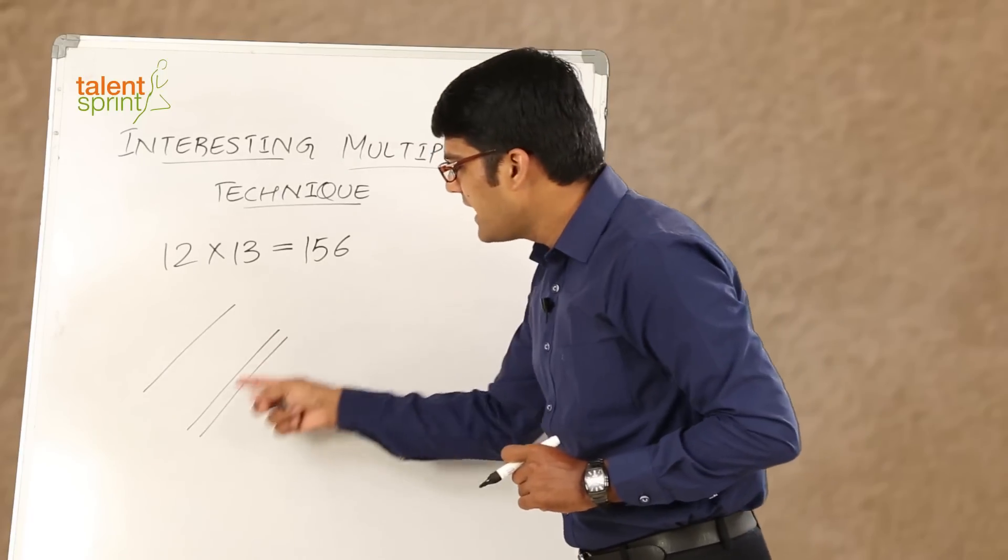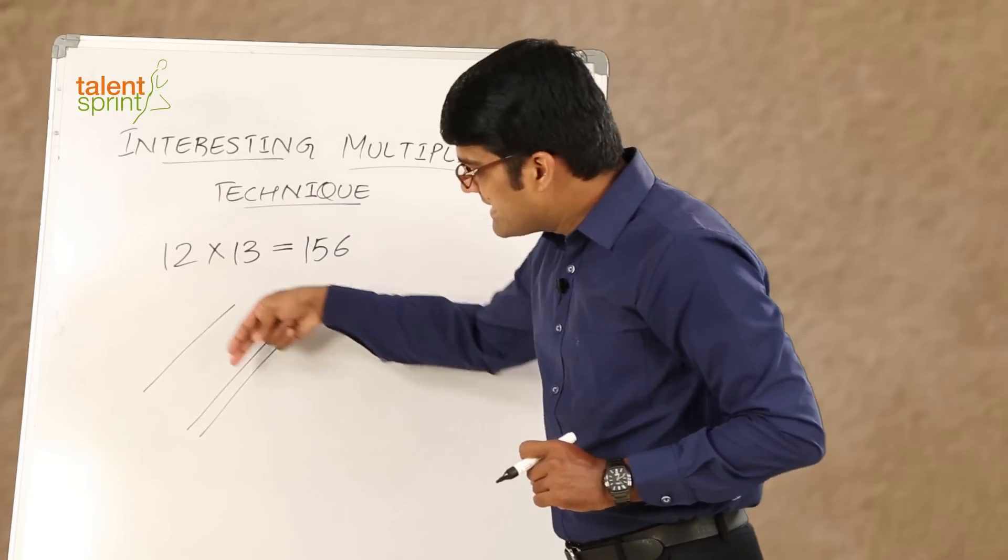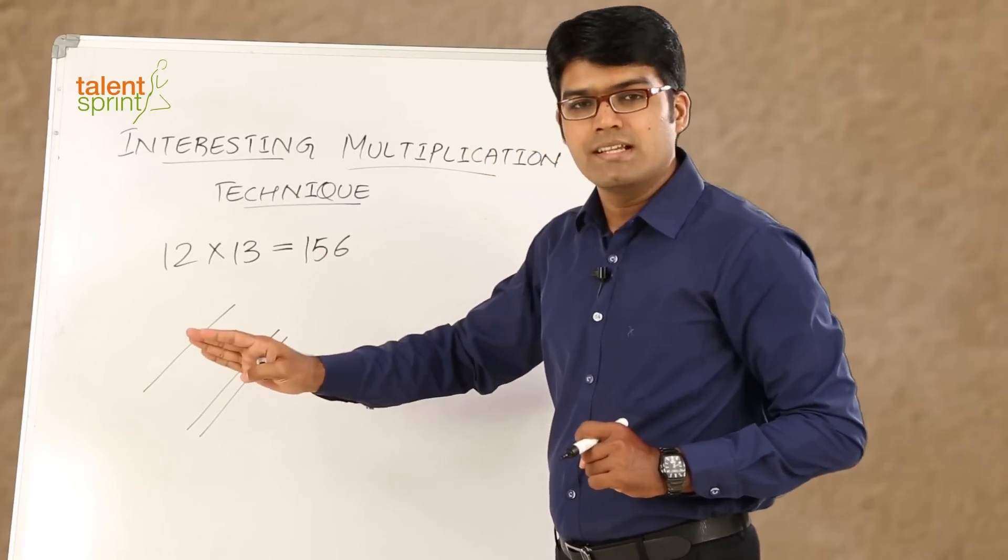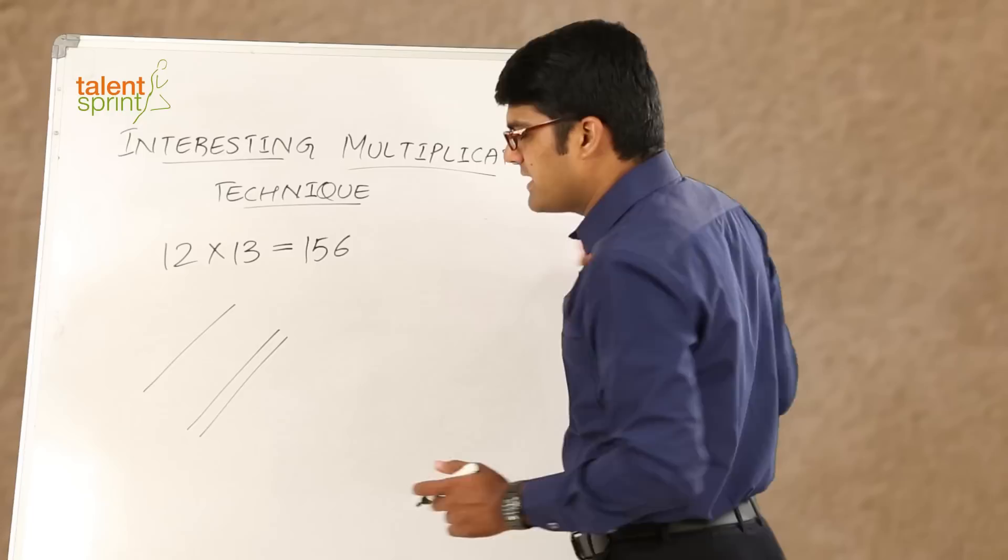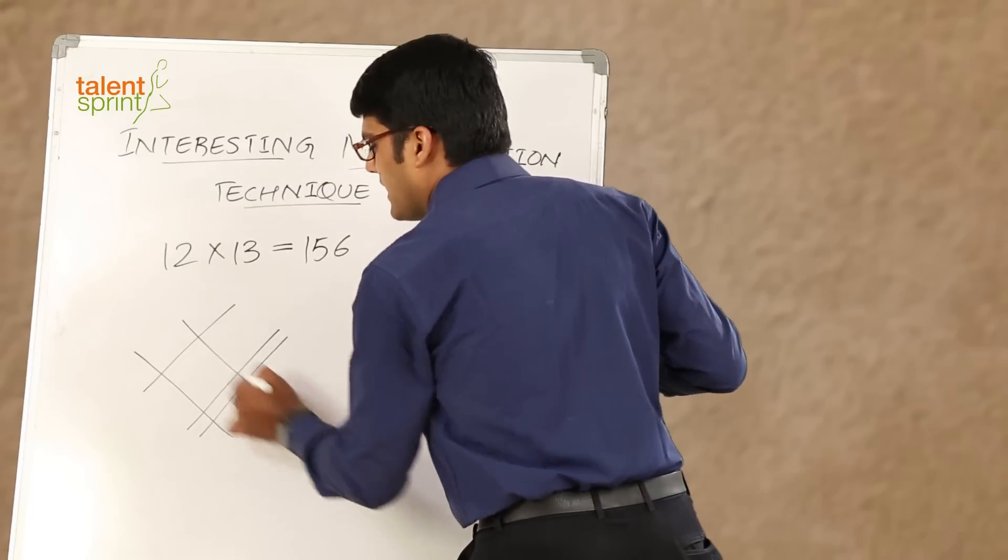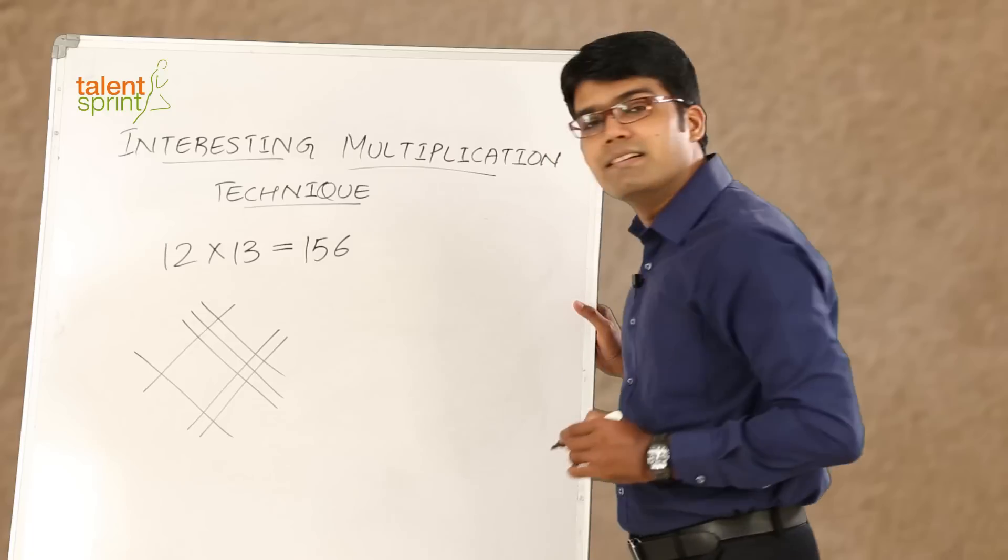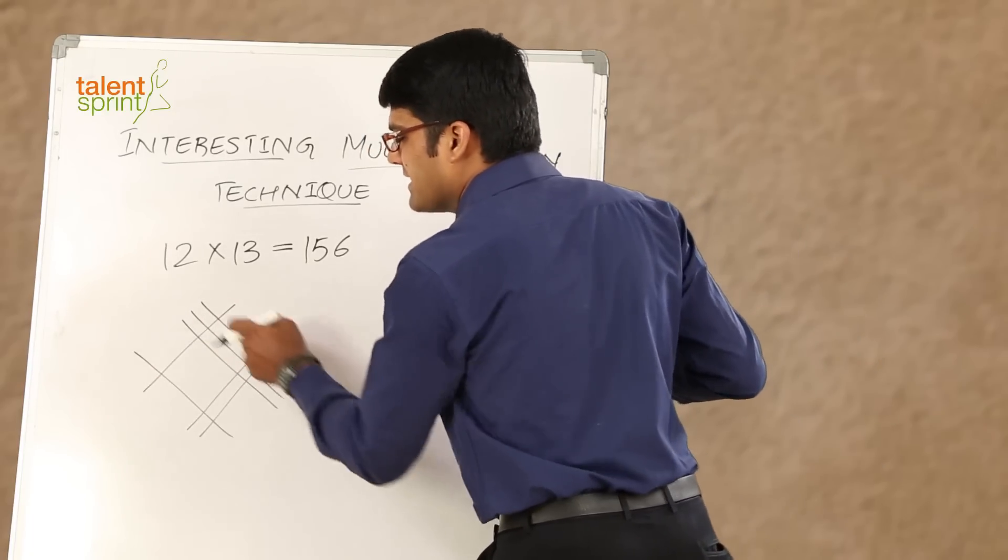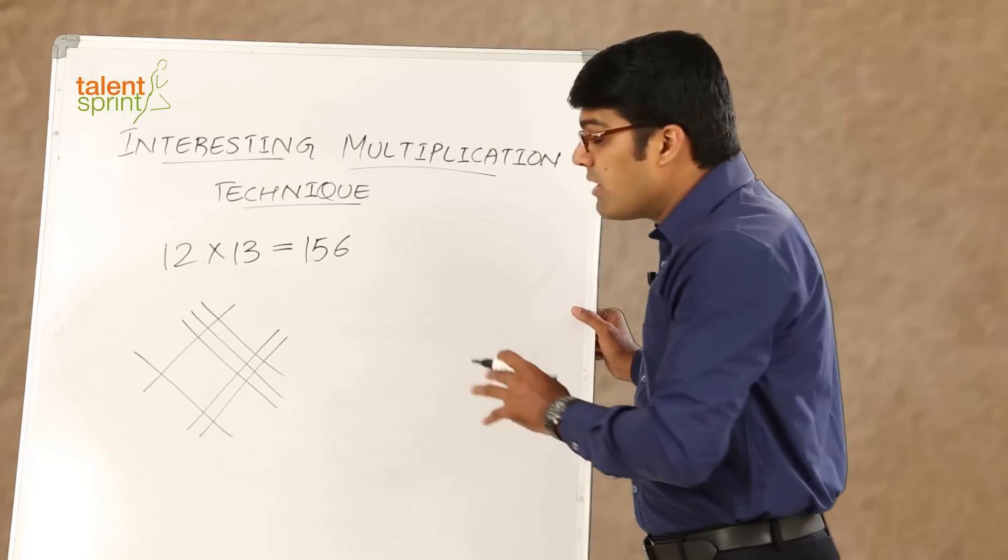Now we need to intersect this set of lines with 13. How do we represent 13? One single line and then 3 lines. So let's say 13, this is 1 and 1, 2, 3. 13, are you able to follow? So 1 and 2 lines represent 12, and 1 and 3 lines here represent 13.